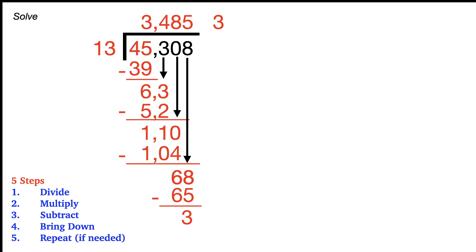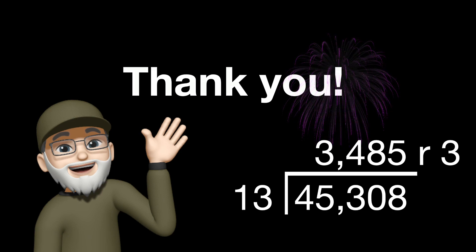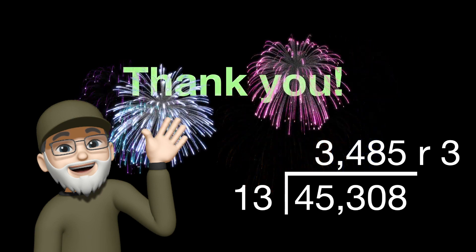And we just want to put an R in there, which stands for your remainder. And your answer is 3,485 with a remainder of 3. So that's an example of how to do a greater number with two-digit divisor. Hope that helped today. Thanks for hanging in there. And we hope to see you on the next video.